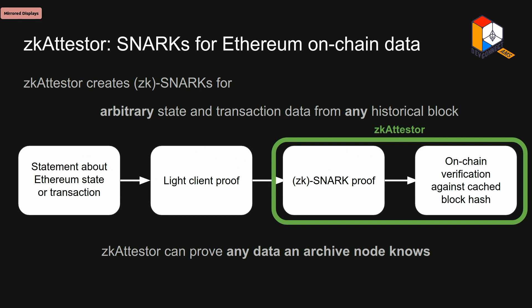Let me tell you about how ZK Attester works mechanically. The idea is that it creates ZK snark proofs for arbitrary state and transaction data from any historical block of Ethereum. The way that works is you start with a statement about a state or transaction, you call your favorite geth node — maybe your own, maybe Infura — to get a light client proof of that state or transaction. Then you feed it to ZK Attester, which will give you back a ZK snark proof, which can then be verified on-chain against the cached block hash in a smart contract. Through this procedure, ZK Attester is able to prove any data that's available to an Ethereum archive node on-chain.